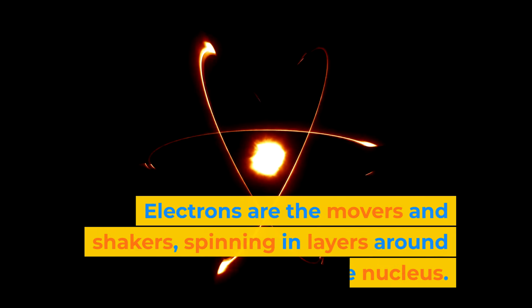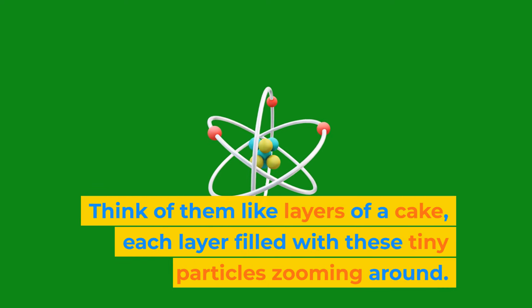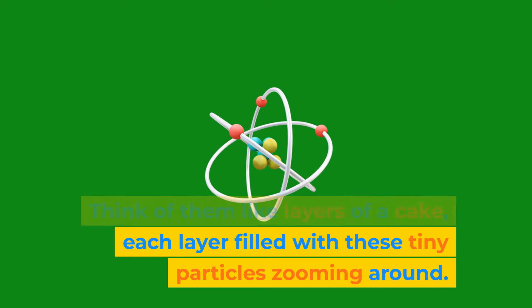Electrons are the movers and shakers, spinning in layers around the nucleus. Think of them like layers of a cake, each layer filled with these tiny particles zooming around.